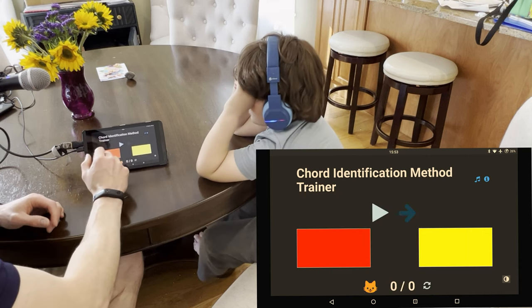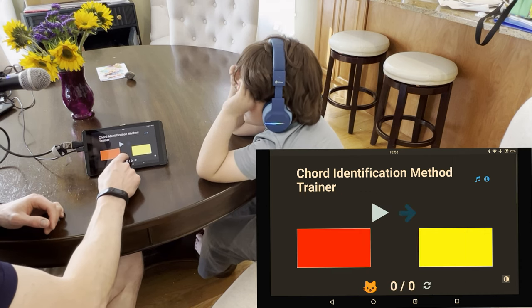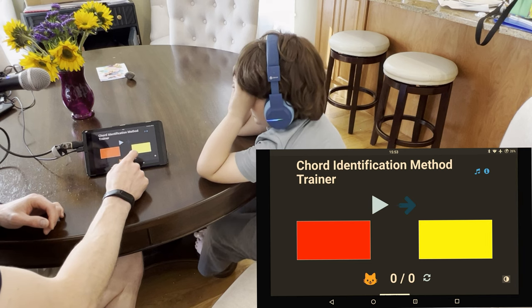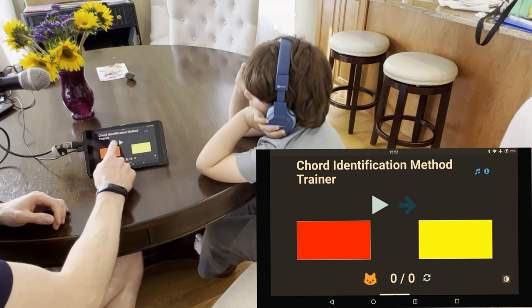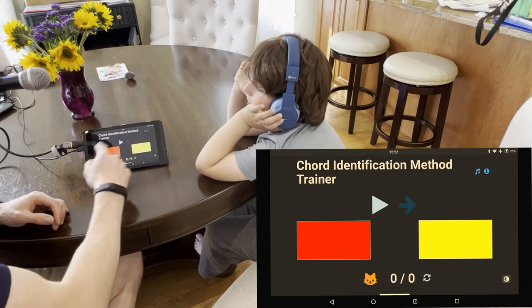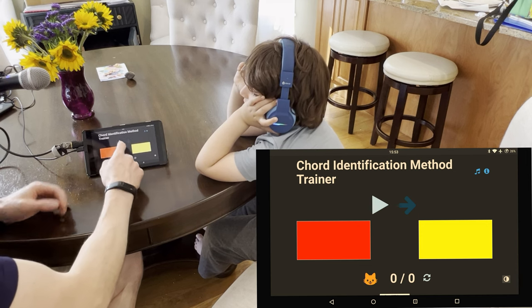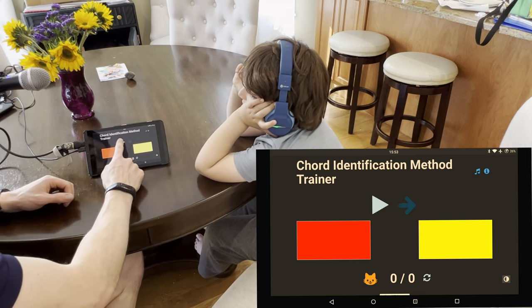Okay, so now that you're used to that, let's start on the trainer. With the trainer, what we do is we press play. He's going to hear the chord, and then he selects which of the two colors corresponds to the sound you hear.